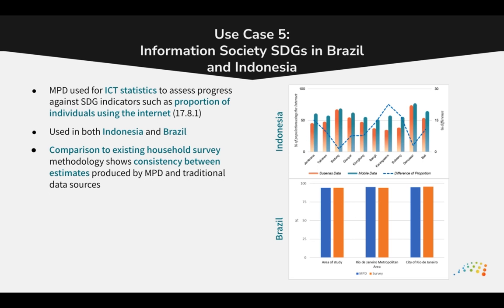Lastly, mobile phone data can be used to calculate information society sustainable development goal indicators. For example, mobile phone data has been used to calculate the percentage of the population in Indonesia and Brazil using the internet. Comparison to traditional data sources shows that mobile phone data produces similar results and can complement or supplement existing household surveys.